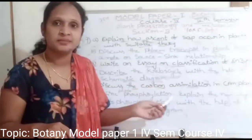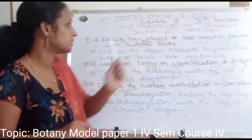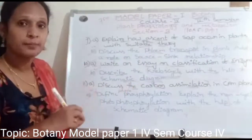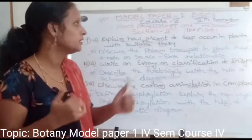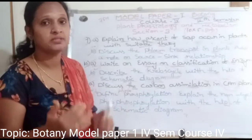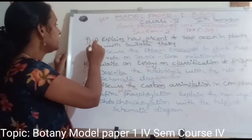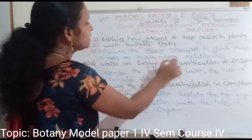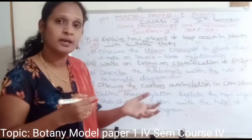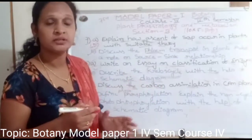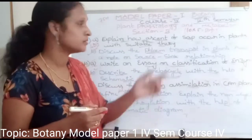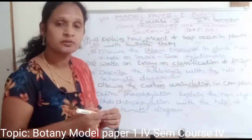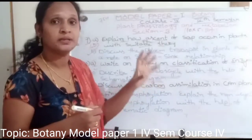Section B is 10 questions times 5 marks equals 50 marks. First question: Explain how ascent of sap occurs in plants with suitable theories. Ascent of sap in higher plants and large trees involves three parts of water movement. Question 9b: Discuss phloem transport in plants and add a note on source and sink relationship. Transport occurs through vascular bundles — xylem transports water, phloem transports food materials.